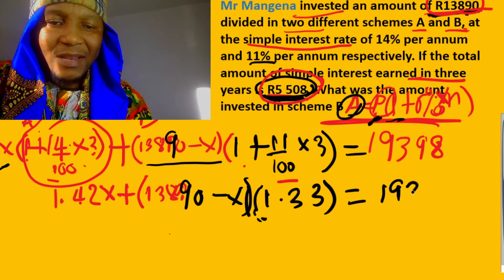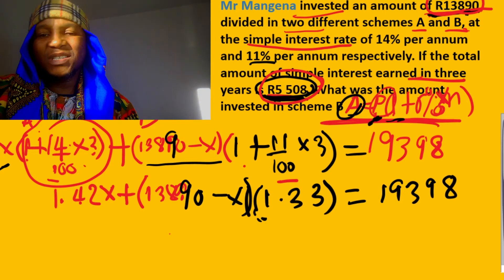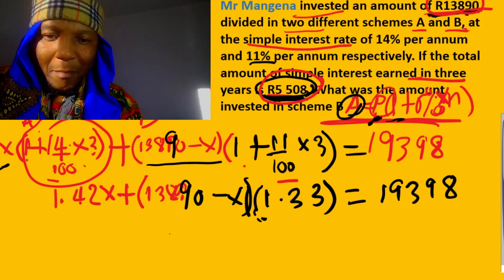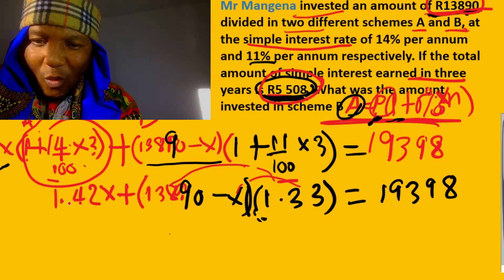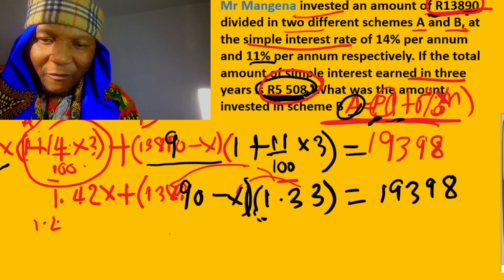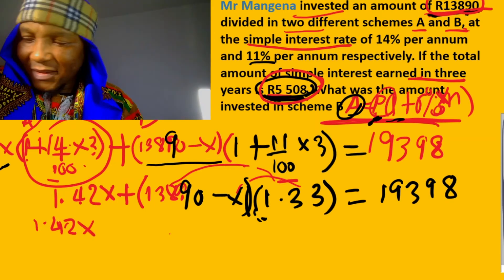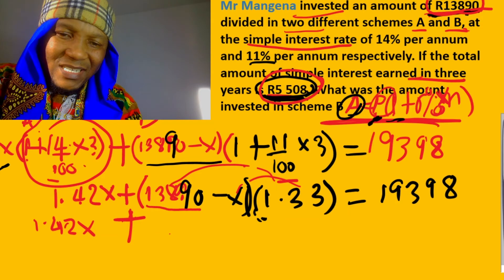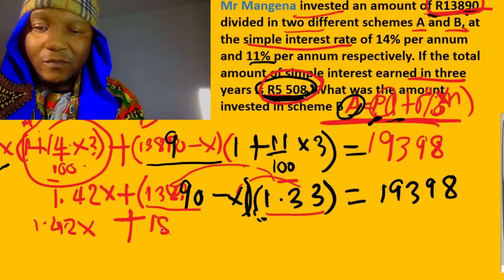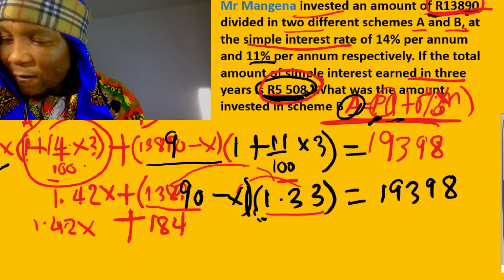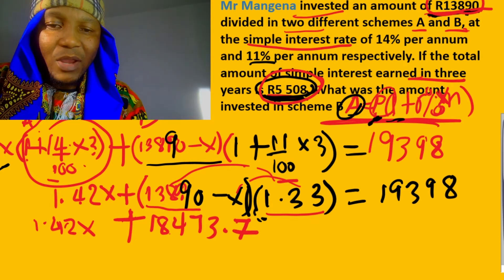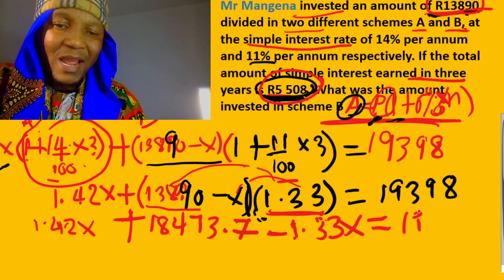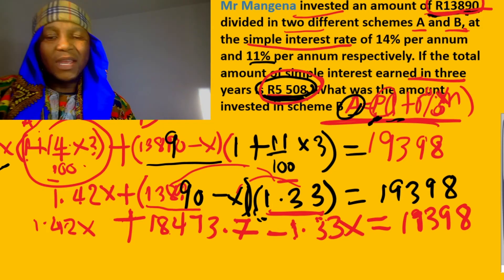We simplify: multiply out the first term to get 1.42x, then multiply 13,890 by 1.33 which gives us 18,473.7. So the equation becomes 1.42x plus 18,473.7 minus 1.33x equals 19,398.